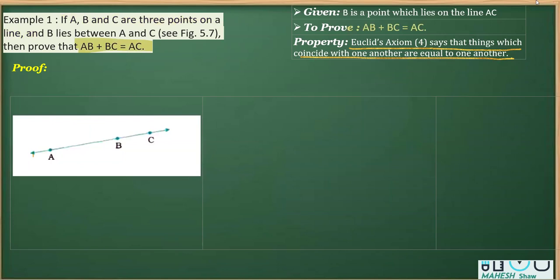So clearly, we can say that since AB plus BC is coinciding with AC, therefore it should be equal.